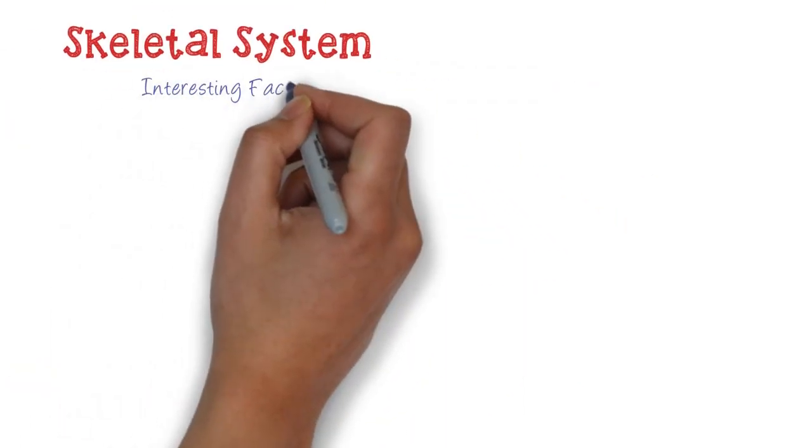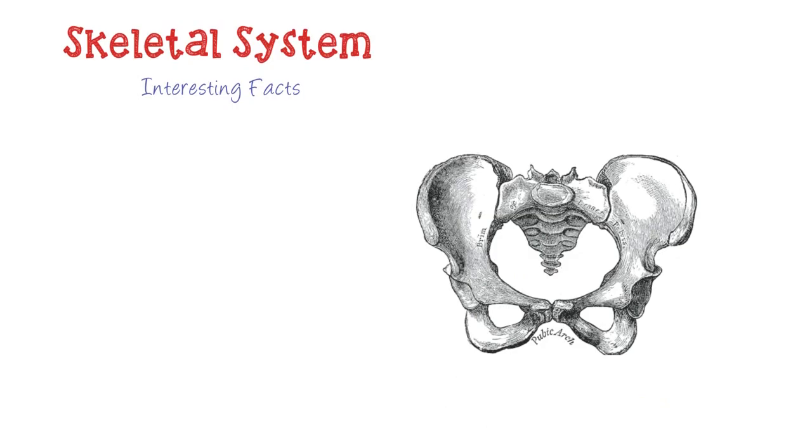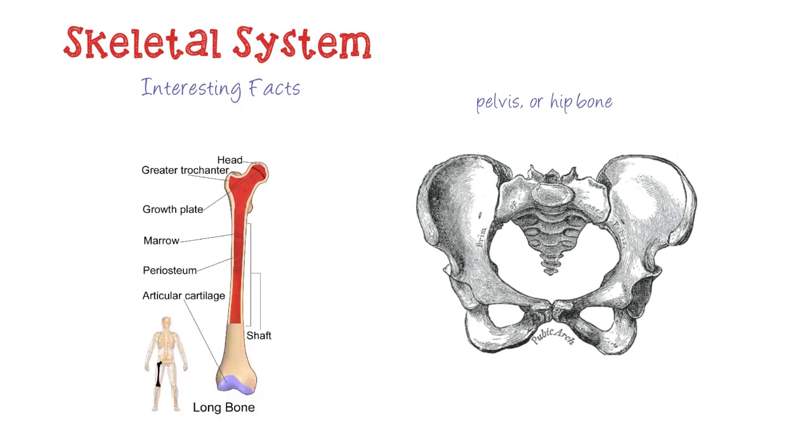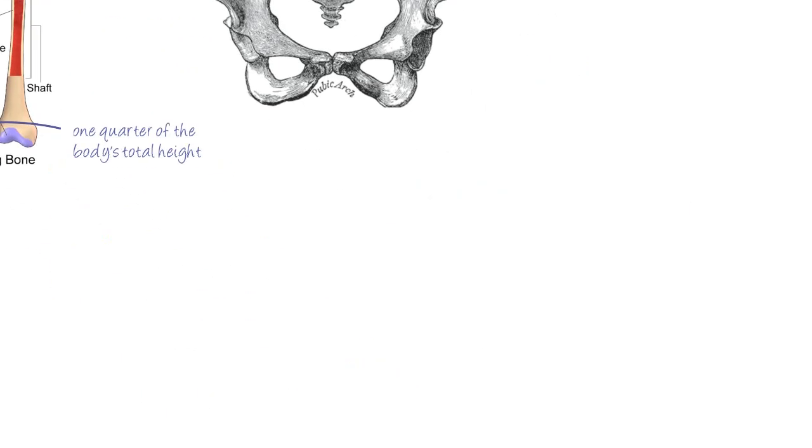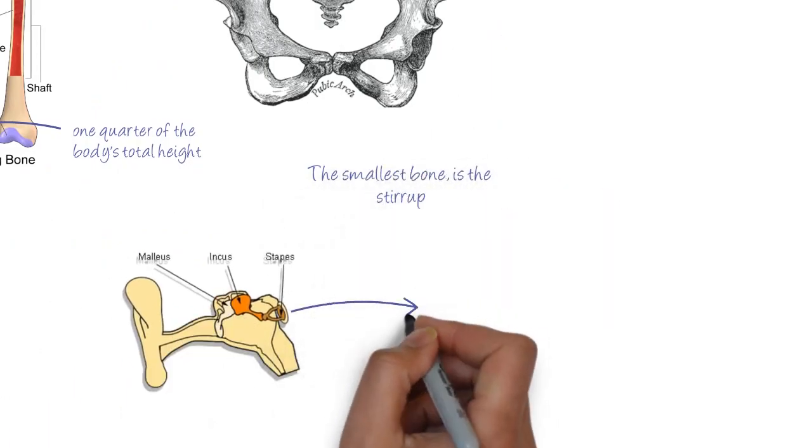The skeletal system: interesting facts. The largest bone is the pelvis, or hip bone. In fact, it is made of six bones joined firmly together. The longest bone is the femur in the thigh. It makes up almost one quarter of the body's total height. The smallest bone is the stirrup, deep in the ear. It is hardly larger than a grain of rice.